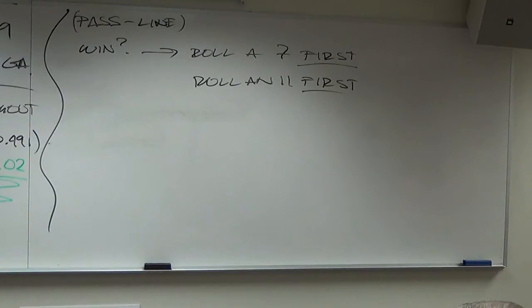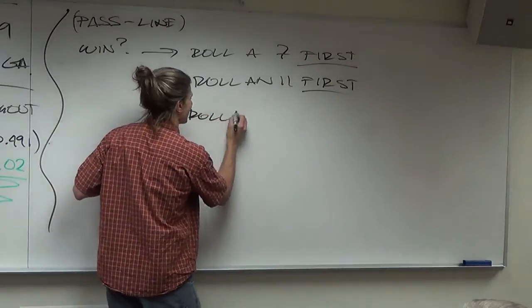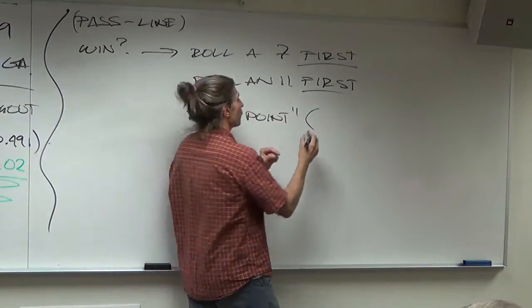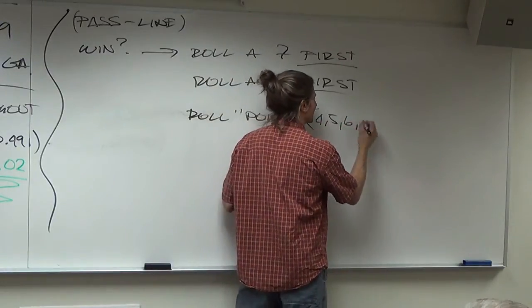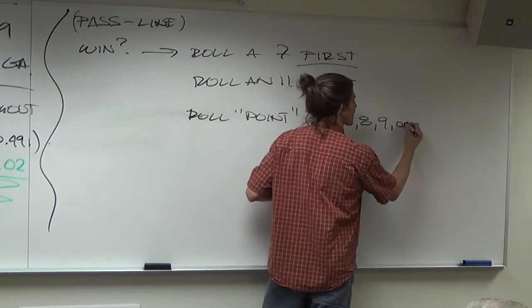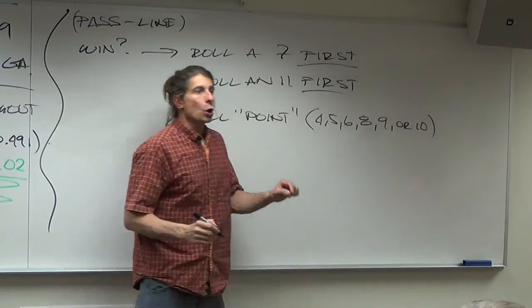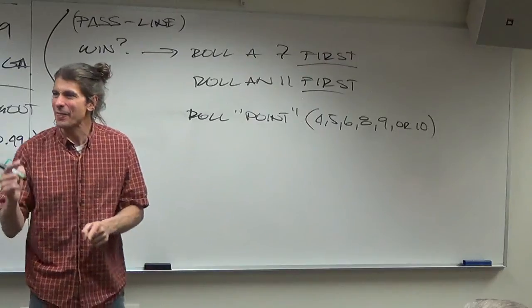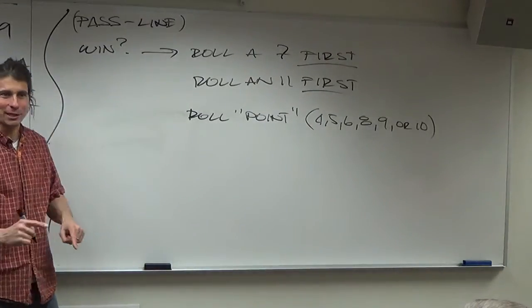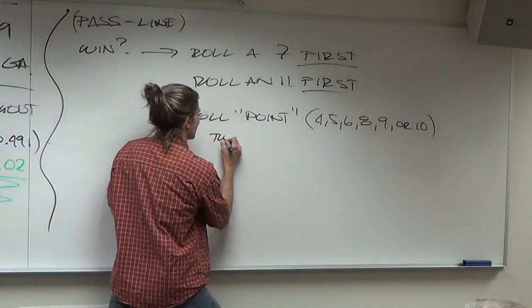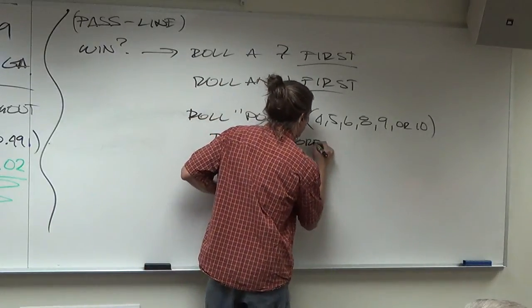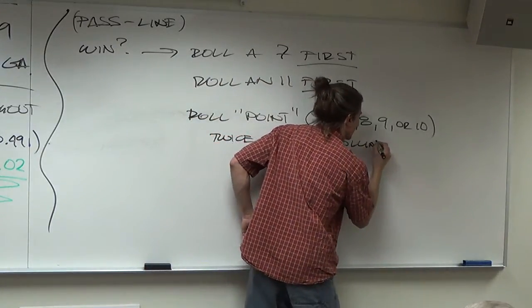How else can you win? Roll a point. Now, what are the points? There's only six of them. Four, five, six, eight, nine, ten. Four, five, six, eight, nine, or ten twice before rolling seven. That's what makes the game sheer genius right there. Twice before rolling a seven.